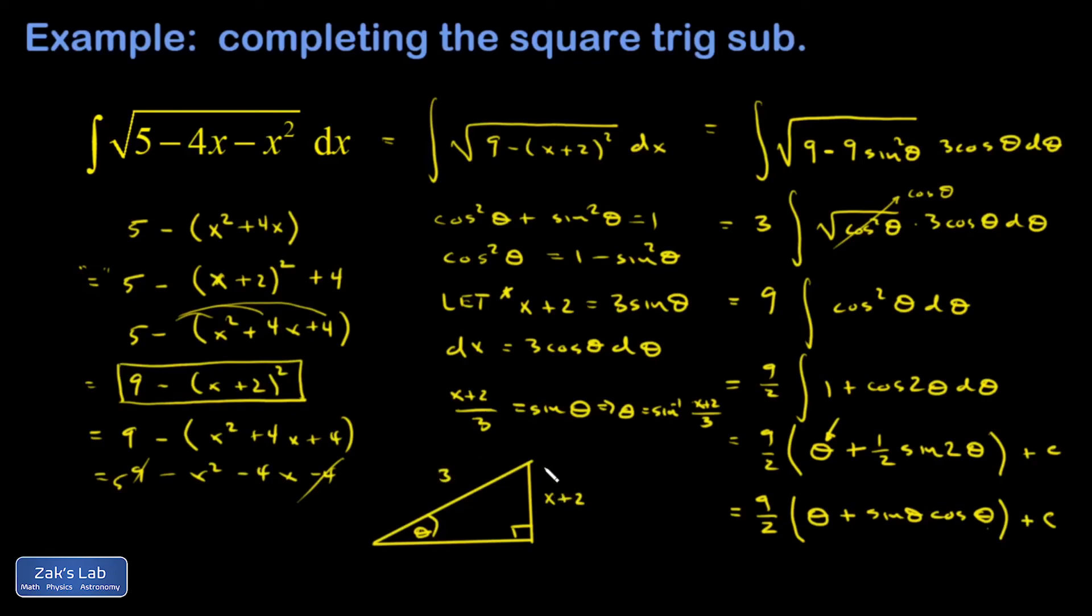I've got to find the missing side so that I can evaluate the cosine function. I like to just write it as a question mark and apply the Pythagorean theorem: ?² + (x + 2)² = 3². So ? must be the square root of 9 - (x + 2)², which is actually exactly what was inside of our original square root.